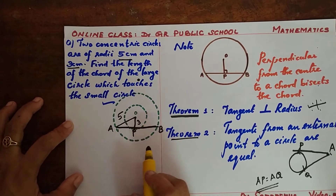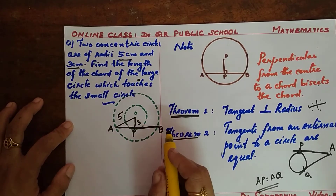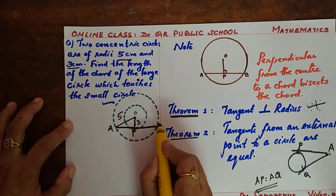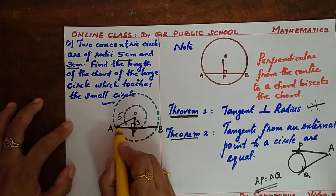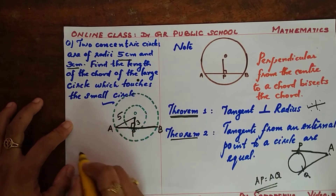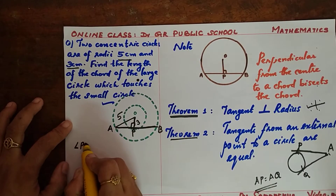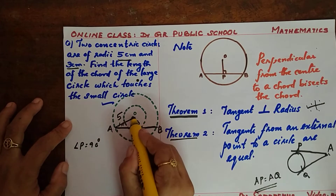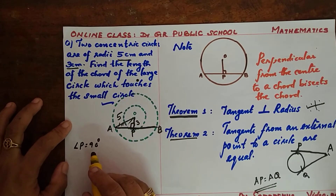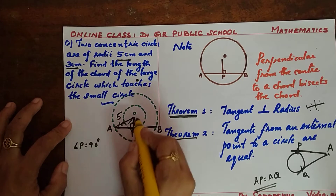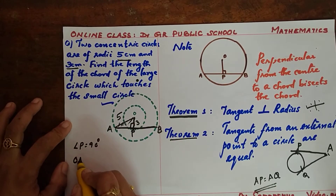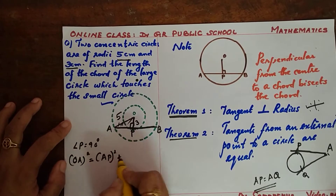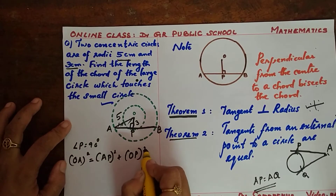The chord AB is a tangent to the smaller circle. We apply Theorem 1 — the tangent and radius are perpendicular to each other, so the angle at point P equals 90 degrees. Therefore, triangle OAP is a right triangle, and we can apply the Pythagorean theorem: hypotenuse squared equals base AP squared plus altitude OP squared.